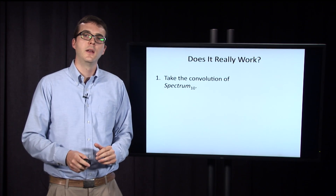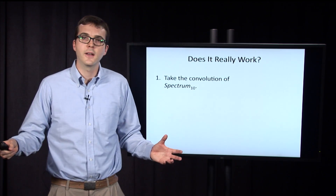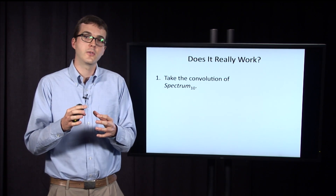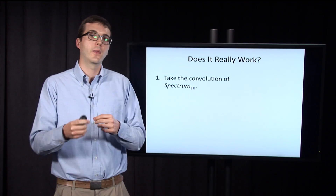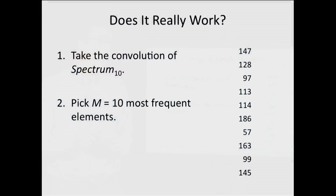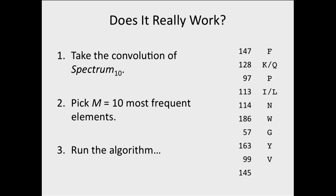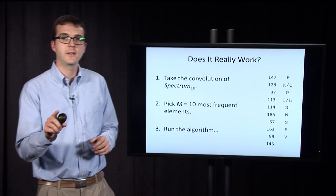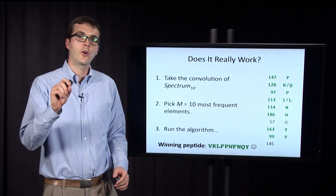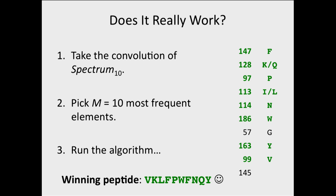Does this algorithm really work? Let's consider spectrum 10 — the leaderboard method didn't work for it when we expanded our alphabet. Let's see if it works now with the convolution. The first step is to take the convolution, then pick the 10 most frequent elements, which are shown here. Most correspond to standard amino acids, though 145 was non-standard. We run the algorithm on only these amino acids, and the winning peptide is tyrosinine B1. It reconstructed the correct peptide just from the 10 most frequent elements in the spectral convolution.